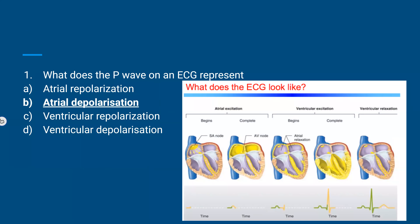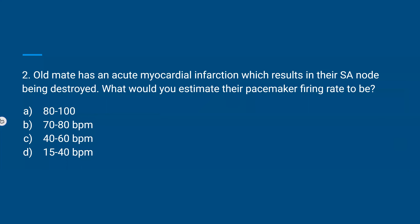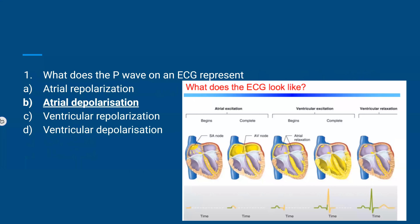The answer is B — atrial depolarization. The P-wave is the first small segment on the ECG and represents when the atrium becomes depolarized. You can learn off that picture to see what's happening at each part of the trace.